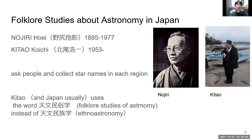Let me introduce folklore studies about astronomy in Japan. Nojiri Oe and Kitao Koichi have researched folklore studies about astronomy in Japan. They interview and ask people, and collect the names of stars in each region. Kitao uses the word 'folklore studies of astronomy.' In Japan, this word was used instead of ethnoastronomy. Unfortunately, the two words 'folklore studies' and 'ethnology' in Japan have the same pronunciation — both are 'minzoku-gaku' in Japanese.